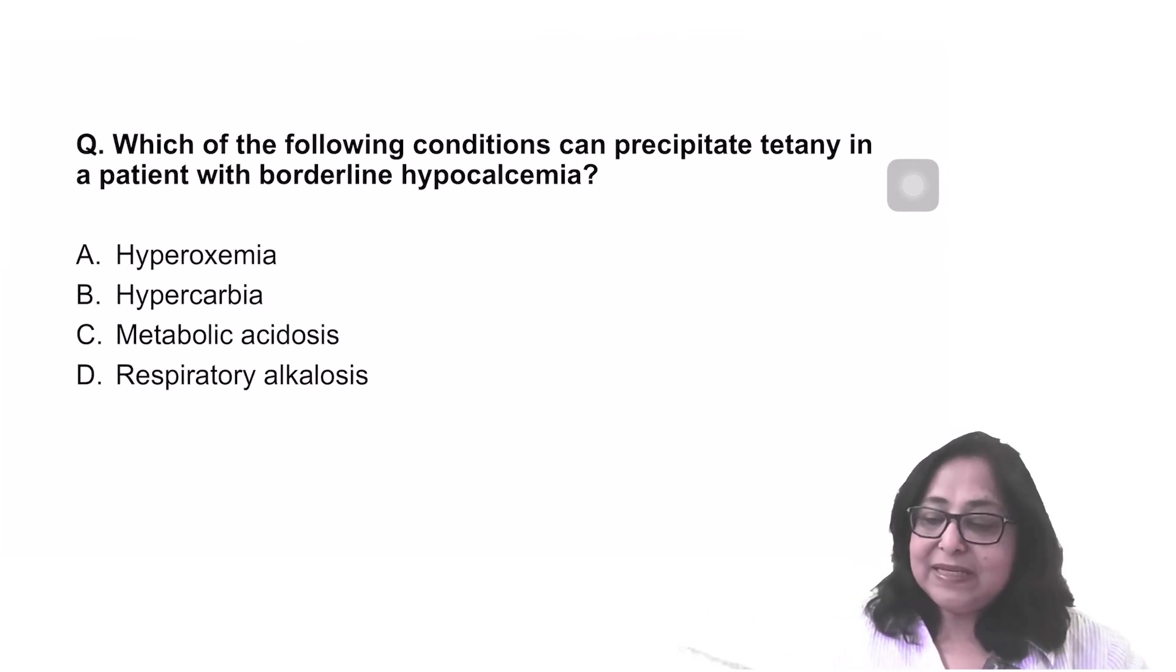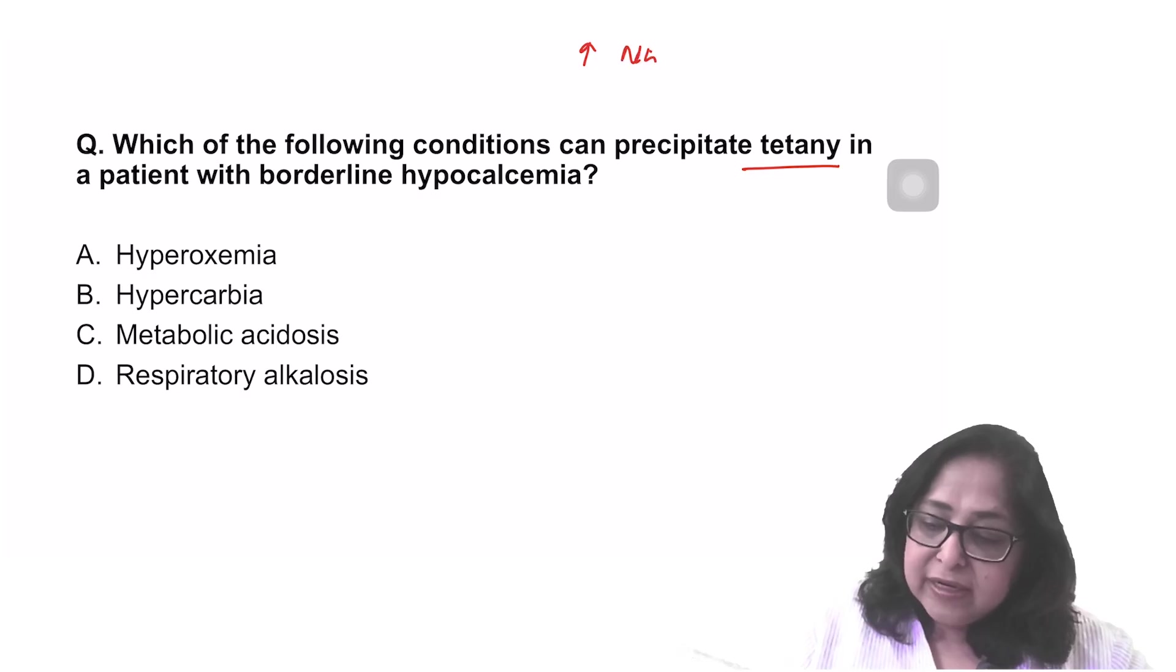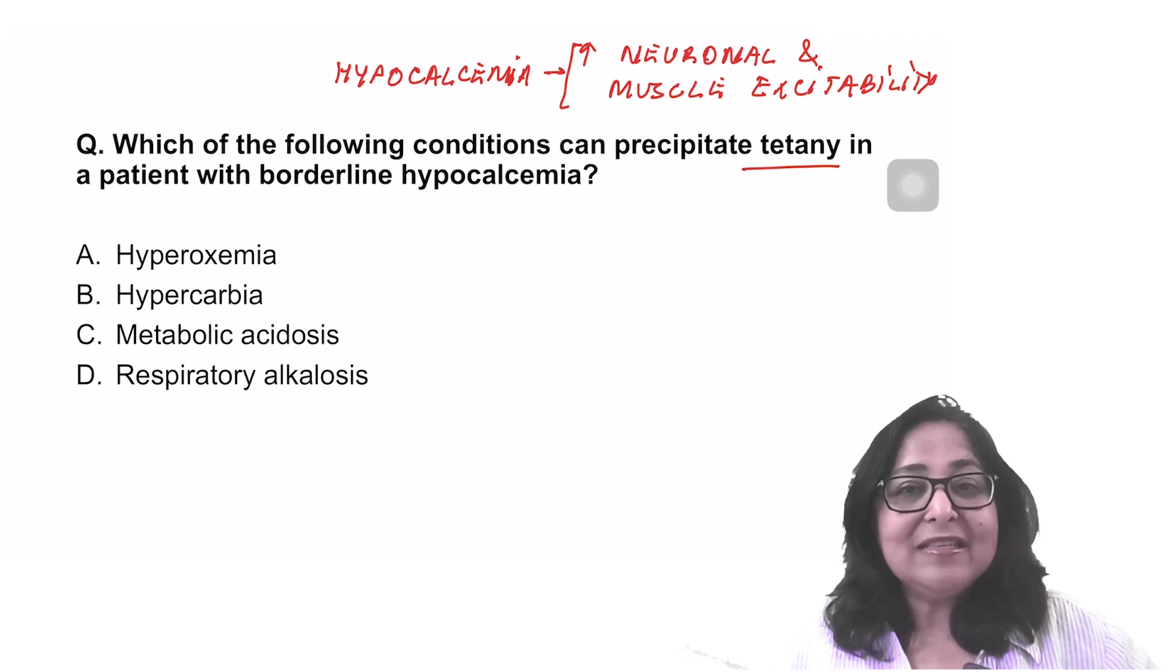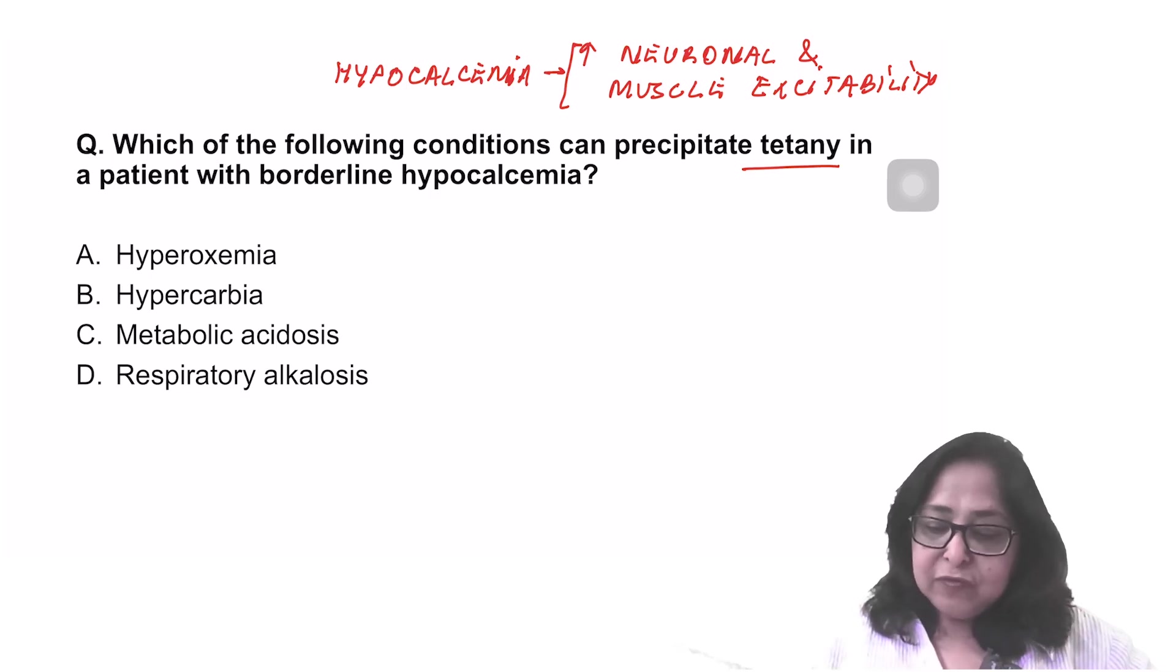Let's have a look at the next question. Which of the following conditions can precipitate tetany? What is tetany? There is an increase in the neuronal and muscle excitability. And what can cause tetany is hypocalcemia. Hypocalcemia will increase the neuronal and muscle excitability. And that is why carpopedal spasm, Chvostek sign positive, that is seen in hypocalcemic tetany. Now the question says, which of the following can precipitate tetany, especially in a patient of borderline hypocalcemia? Hyperoxemia and hypercarbia do not affect the calcium levels. But what happens in respiratory alkalosis?